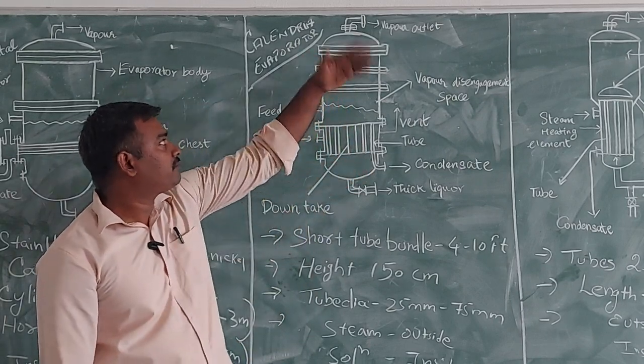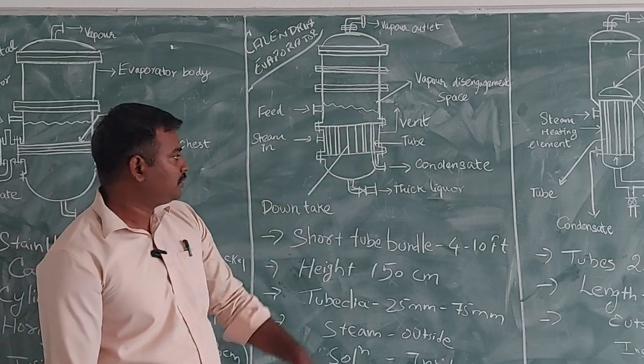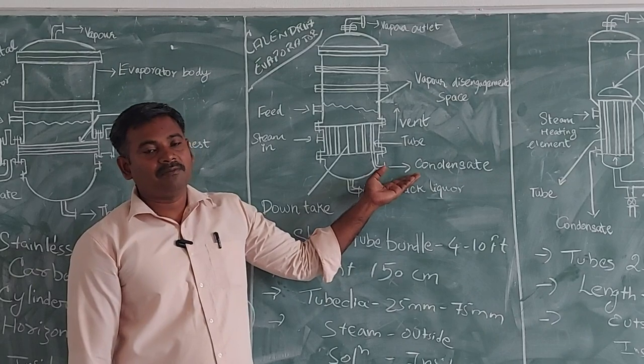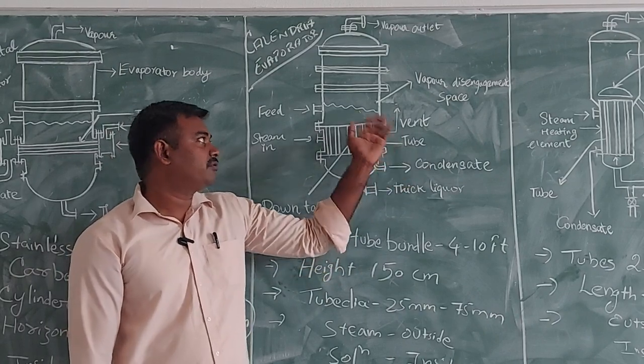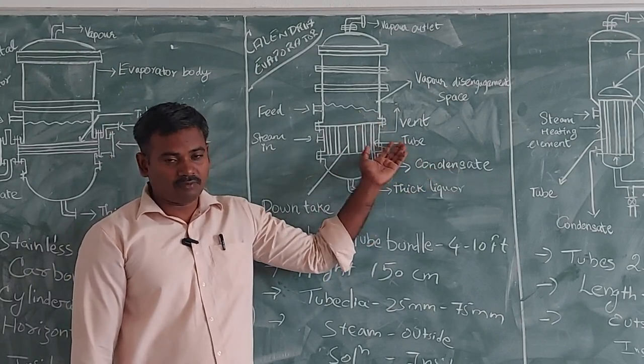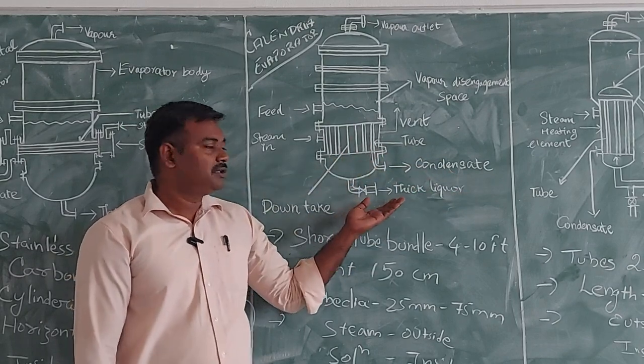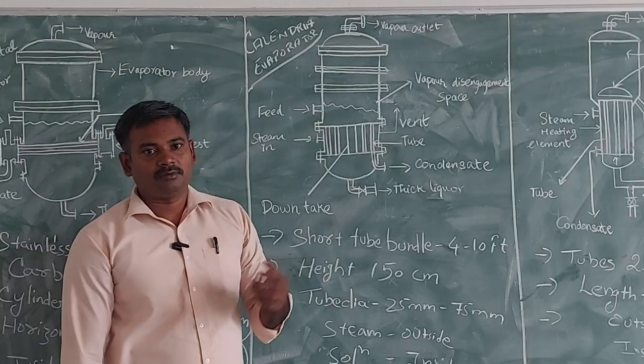And the vapor will be given from the top of your evaporator. And the remaining condensate, so the vapor which have been condensed and that will be also taken from the bottom of the condenser, bottom of the evaporator and remaining liquid will be taken from the bottom of the evaporator. Thank you.